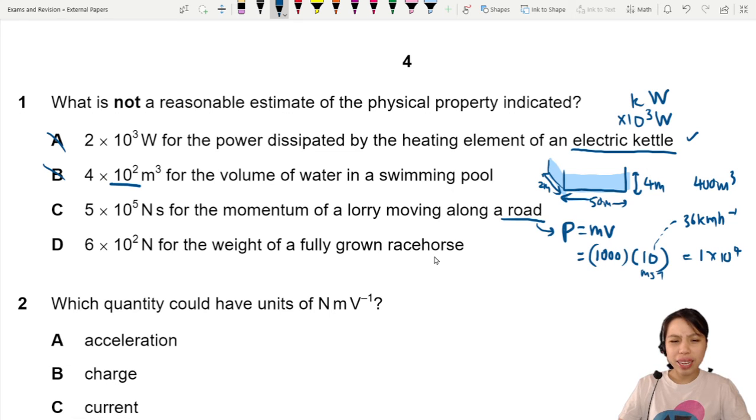600 N for the weight of a fully grown racehorse. Okay. This one is a bit hard. Like how, how do you know how heavy is a racehorse? We don't know. But do you know how heavy you are? Average human is about a human. Weight is, weight goes mg, 70 kg, 80 kg, times 9.81. Let's do a quick check of what this would be.